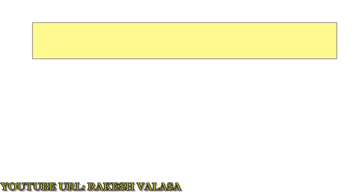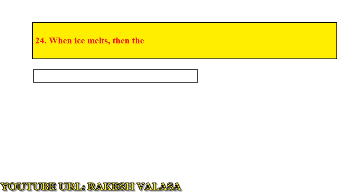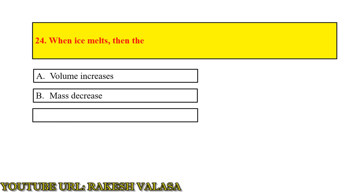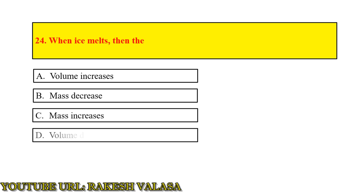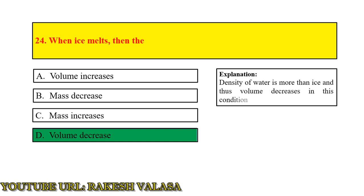Question number 24: When ice melts, then the — Answer: Volume decreases. Explanation: Density of water is more than ice, and that's why volume decreases in this condition.